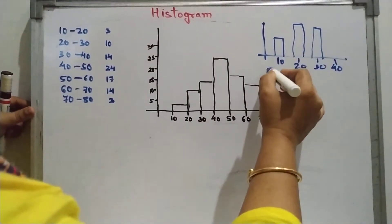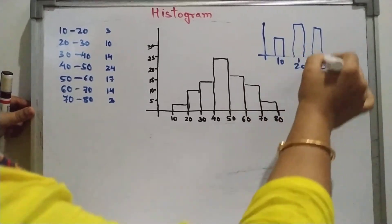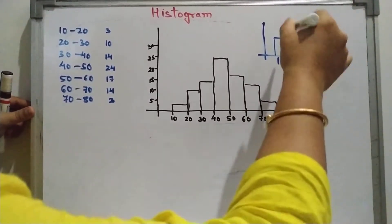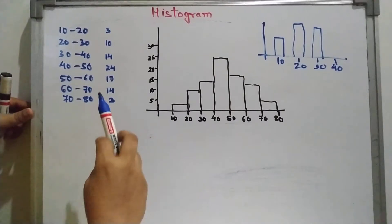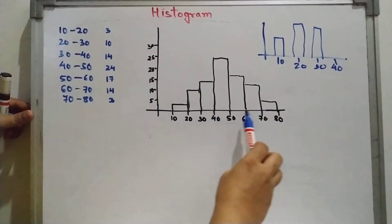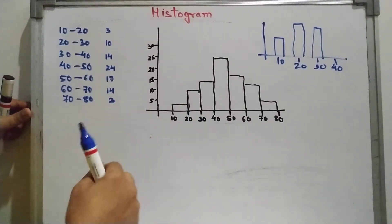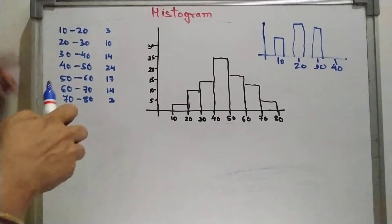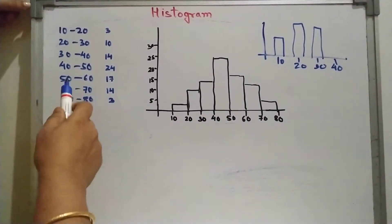We get a gap here in between the rectangular bars. But in histogram it is attached to each other. All are attached, there is no gap. So we plot this for continuous frequency distribution.